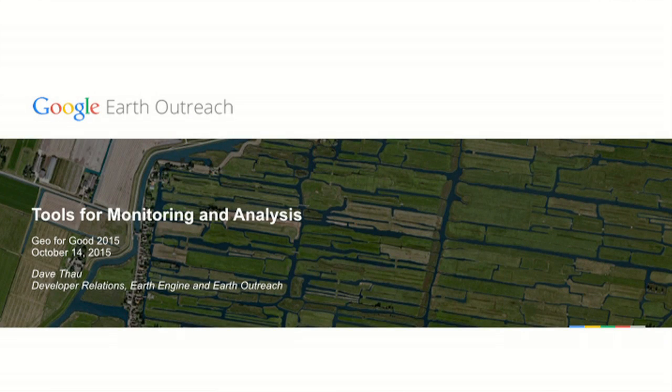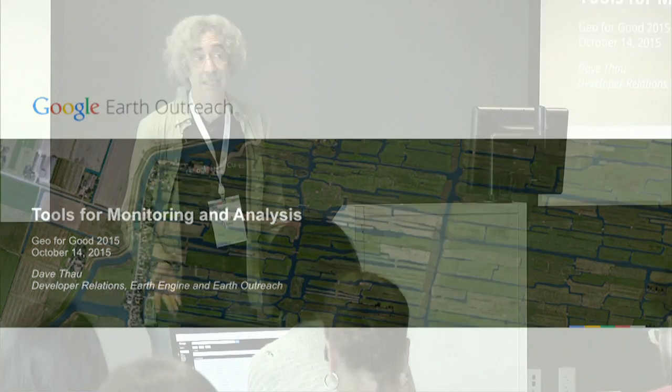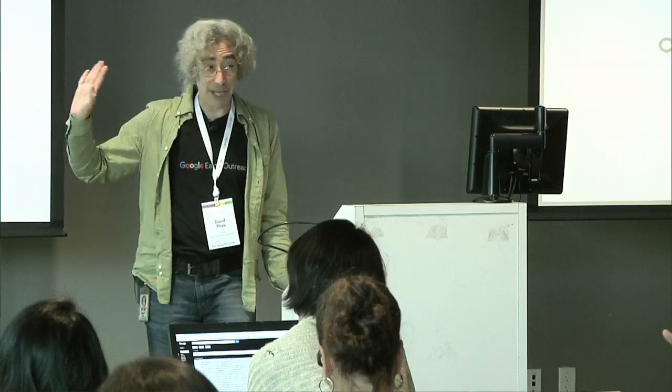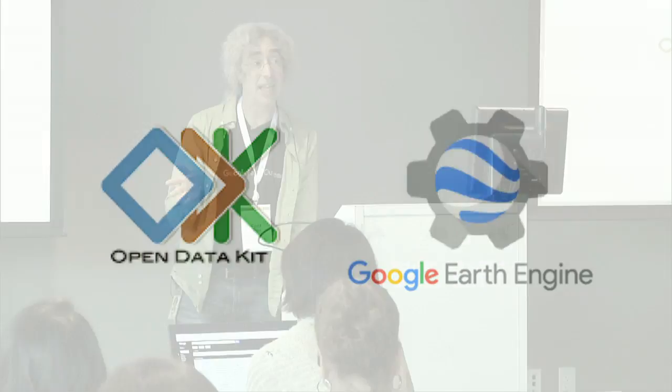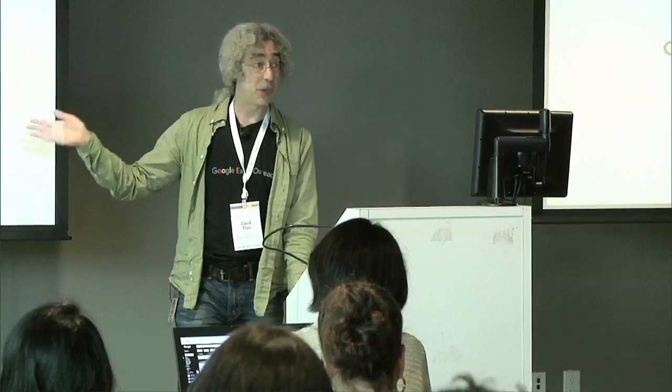I'm going to talk about some of the tools we use for monitoring and analysis. Primarily, I'll talk about Open Data Kit and Google Earth Engine. Most of the sessions today are about one of these two things, so hopefully through what I'm saying now, you'll be able to get a sense for what you might want to attend and what these things do. We have this story we tell of from the ground to the cloud: the ground is Open Data Kit, and the cloud is Earth Engine.